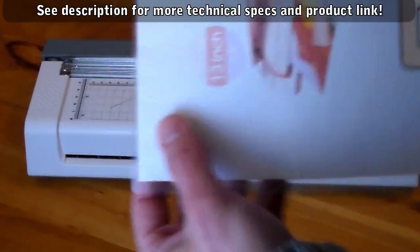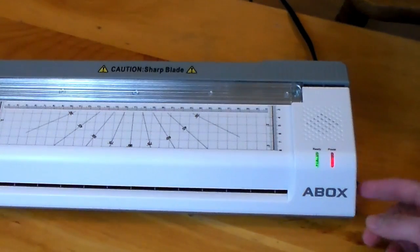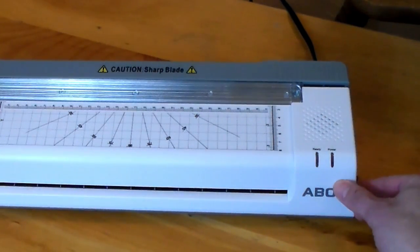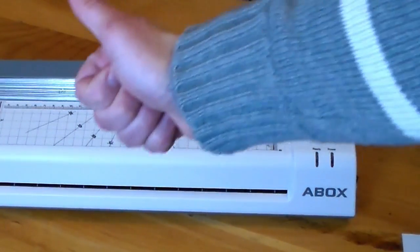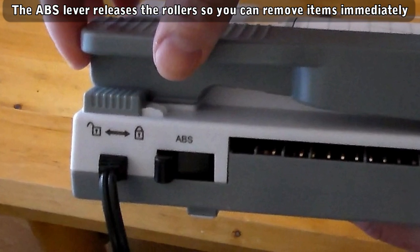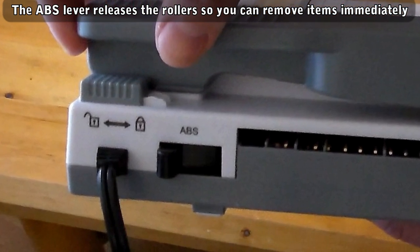To clean, just warm the laminator up and send a blank piece of paper through. And there's a release lever in the back to clear out jams. Neither of these things you should have to do very often if you're using the machine properly.